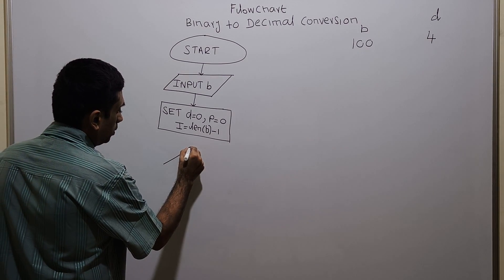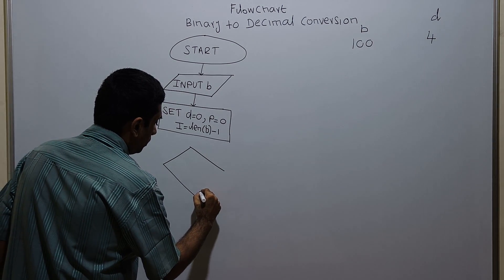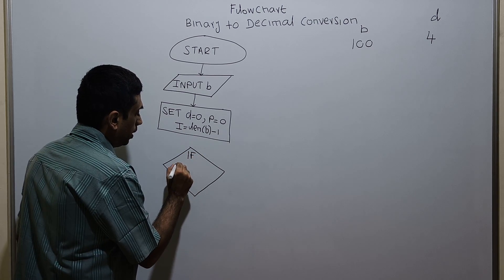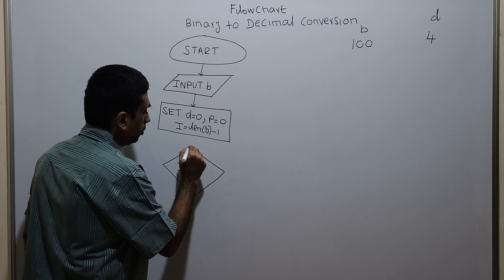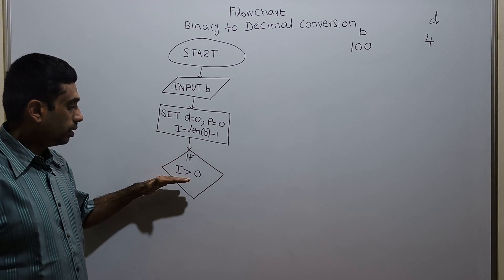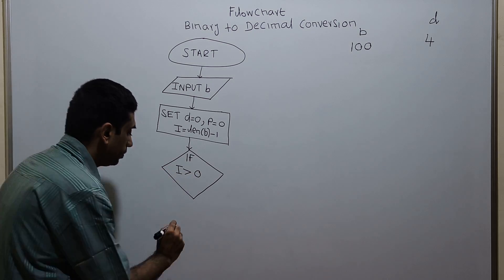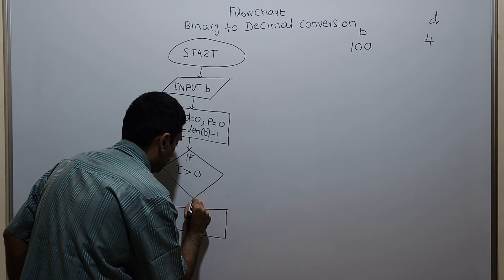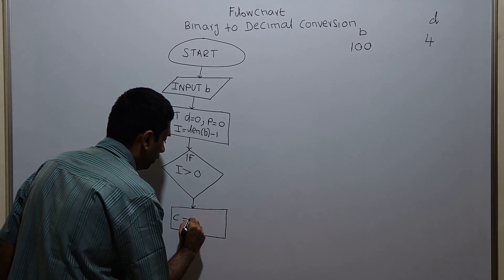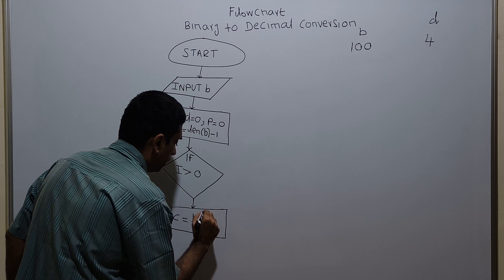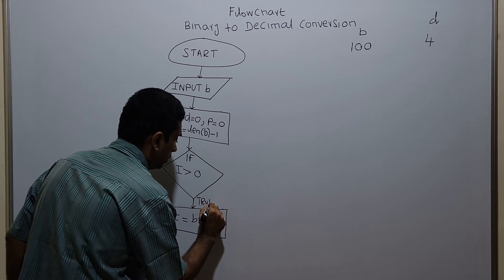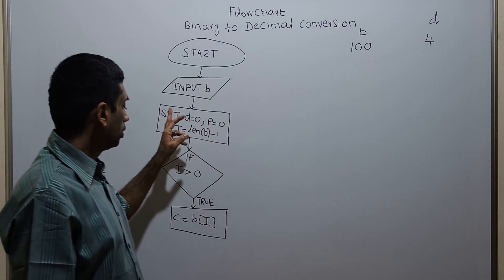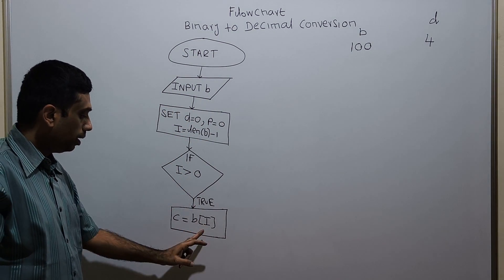I am checking a condition: if I greater than 0. The initial value of I is 2, which is the length of B minus 1 — length of B is 3, so 3 minus 1 equals 2. If this condition is true, B of I will get stored. B of 2 will get stored.